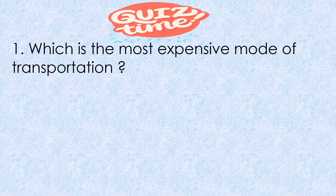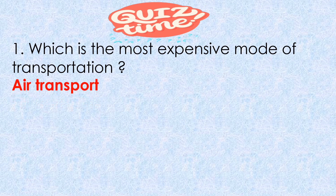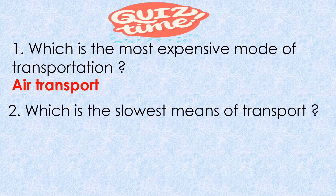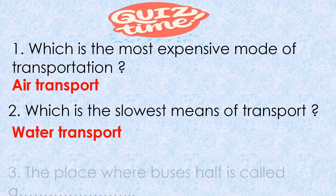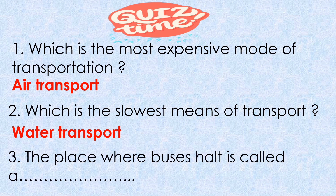Now quiz time. First question: which is the most expensive mode of transportation? Air transport. Second question: which is the slowest means of transport? Water transport. Third question: the place where a bus halts is called a? Bus stop.